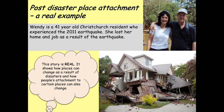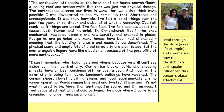You've just looked at what might cause a place to change. Here is a natural hazards example. We have a story by a lady called Wendy — a real-life example of somebody living in Christchurch, New Zealand, during the 2011 earthquake. She lost her home and job as a result. This story shows how places can change as a result of disasters and how people's attachment to certain places can also change. On your worksheet, read through the story and summarise how the Christchurch earthquake influenced this person's place attachment.